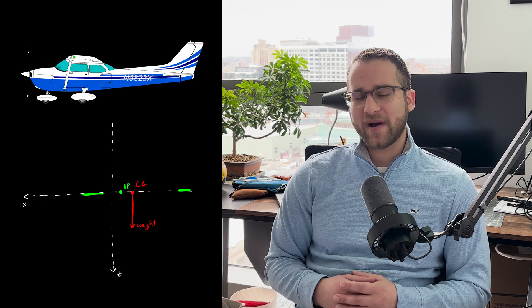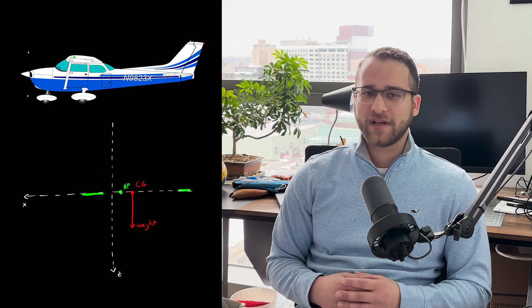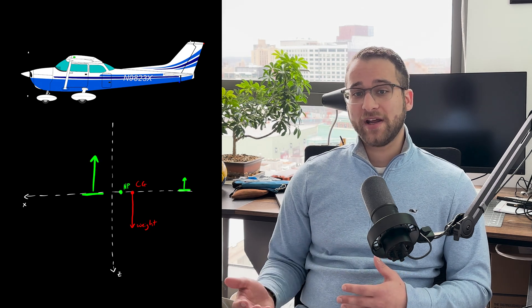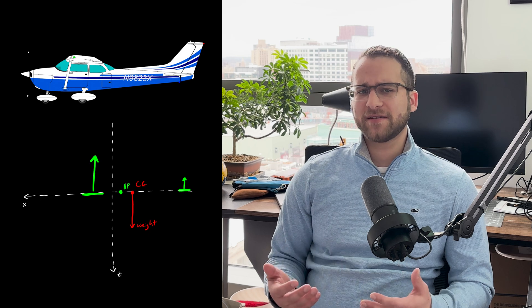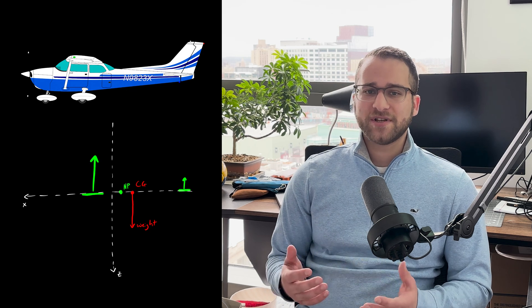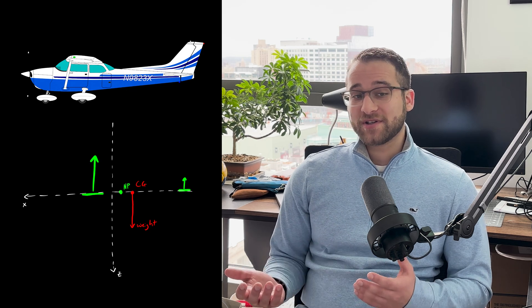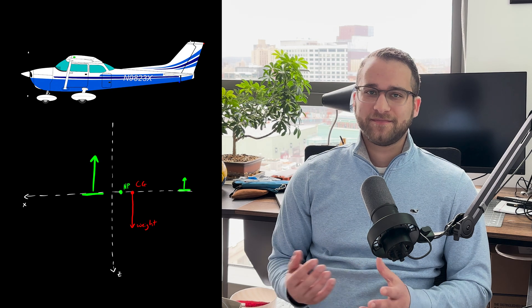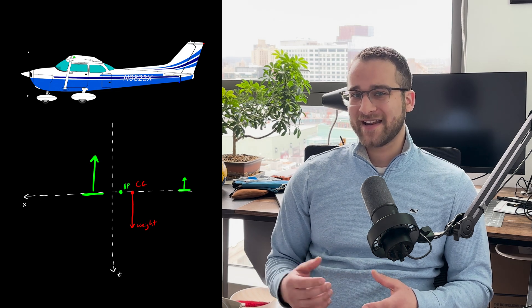Here's where things get interesting. If your center of gravity is behind the neutral point, something counterintuitive happens. Yes, you could have both your main wing and horizontal stabilizer effectively generating lift upwards, which seems efficient, right? More lifting surfaces, more efficiency. But here's the problem. This configuration is unstable.